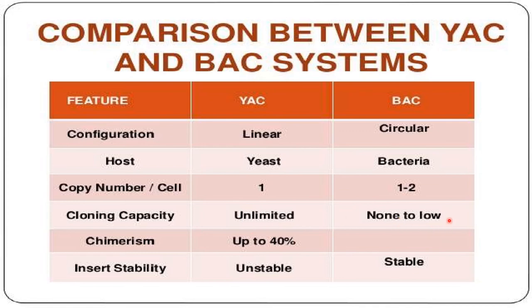Cloning capacity is unlimited in the case of YAC, whereas it is none to very low in BAC. Chimerism is seen up to 40 percent in YAC, whereas chimerism is nil in BAC. Insert stability is unstable in YAC, whereas it is very stable in BAC, which is why BAC is more suitable.